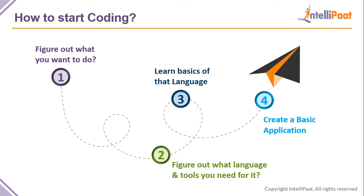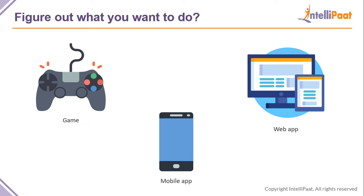For example, you can make a small game. If you're into gaming and want to become a game developer, start off making a very simple game — like the snake game we had on Nokia mobiles, or a space shooter game. Or you can make a web application or mobile application, a very simple one. If you're making a mobile app, start with something that just opens and tells you the time.